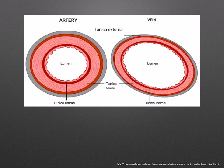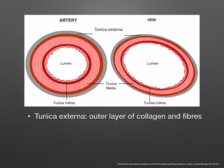Here you can see transverse sections of the artery and vein. There are three main layers that you need to know and to be able to compare between the artery and the vein. Both the veins and arteries have a tough outer layer of collagen fibers called the tunica externa. The tunica intima is the inner layer made of squamous endothelium cells. As we discuss the structure of each of these vessels, relate them to their functions.